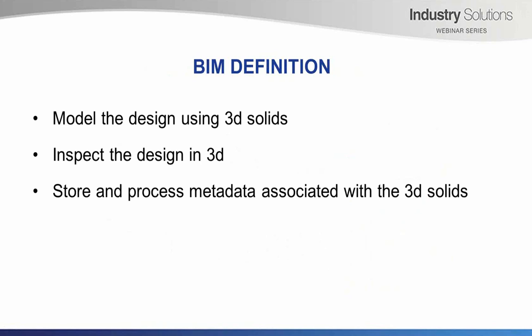The real money, though, is in metadata. BIM information is all about storing information on the 3D solids — what 12D refers to as attributes. This gives users the ability to pick an object on screen and access related data via a mouse click or reporting. Typical data stored might include the installation date of a stormwater system, the manufacturer's part number for a pit grate, or the length of pipe between stormwater pits, which could feed out to a bill of quantities. As design teams collaborate more, we'll see more and more use of metadata.